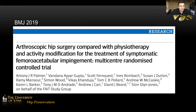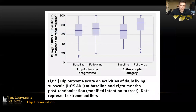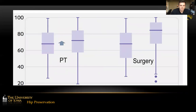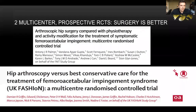Another similarly performed randomized controlled trial was done in Britain, published in the British Medical Journal last year. They randomized patients to physical therapy or arthroscopic hip surgery for FAI and found similar results — improvements were seen in both groups, but the improvements were larger in the surgery group comparing pre-op scores to one-year post-randomization scores. These are two prospective multi-center randomized controlled trials demonstrating a benefit of surgery over physical therapy for patients presenting with FAI.